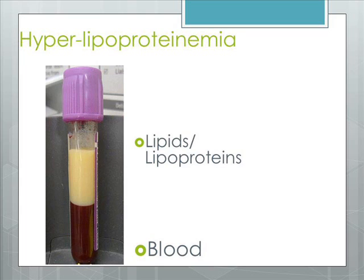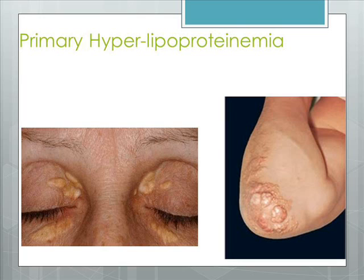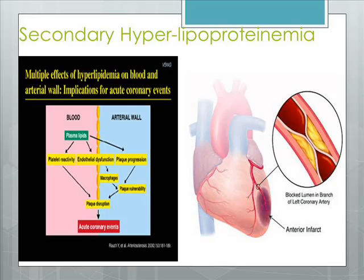Primary hyperlipidemia is usually due to genetic causes such as a mutation in a receptor protein, leading to severe hyperlipidemia associated with lipid deposits in the skin and in the joints. Secondary subtype arises due to other underlying causes such as diabetes, which is regarded as a risk factor for cardiovascular disease.